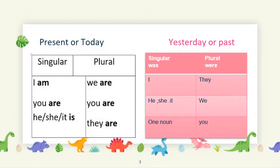You can see we have two charts on the slide. In the first one, we will see that we use 'am' after 'I', we use 'is' after any singular noun or pronoun, and we use 'are' after any plural noun or pronoun. Let's read the chart: I am, you are, he/she/it is. You can be one person or a group of people, so in both cases we use 'are' after 'you'. For other plurals: we are, you are, or they are.